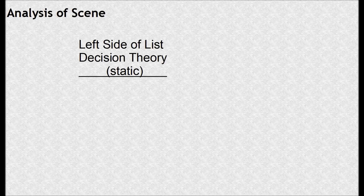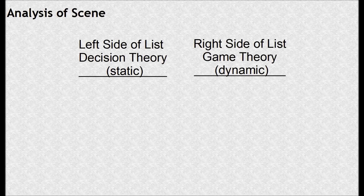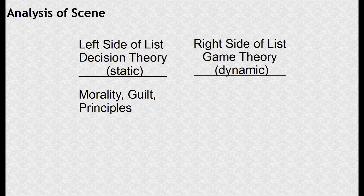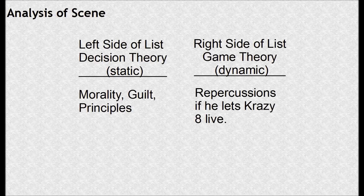Let's analyze the scene. One very important thing is that Walt makes a list which has a left side, which is all decision theory, and a right side, which is all game theory. The left side was all about morality, guilt, principles — taking data and trying to make the best possible decision. The right side of the list, which only had one item, was the repercussions if he lets Crazy Eight live. Walt realizes that if he lets Crazy Eight live, then Crazy Eight is probably going to kill him and all his family. The only way to go about this is that Walt knows what he has to do.